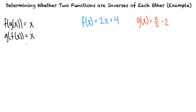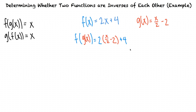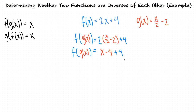Once again, we know the two functions are inverses of each other because we specifically found the inverse of the first function. Let's find the composition f of g of x by substituting x over 2 minus 2 into the x of the f of x function. When we distribute the 2 to the x over 2 and to the minus 2, we get x minus 4 plus 4. Negative 4 plus 4 equals 0, so we're left with f of g of x equals x.